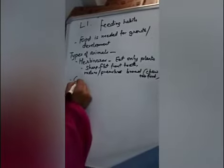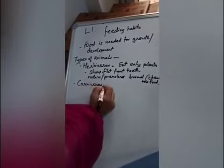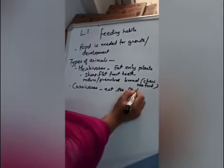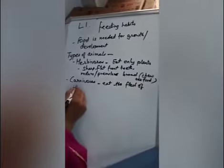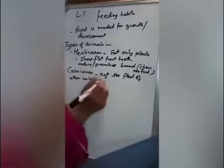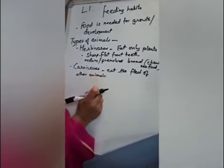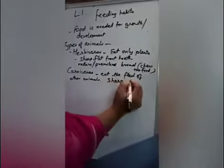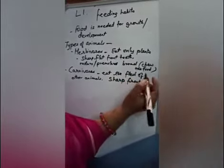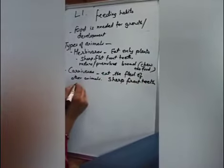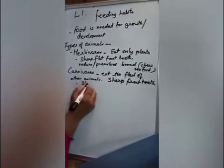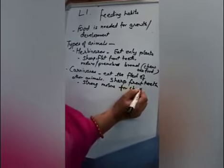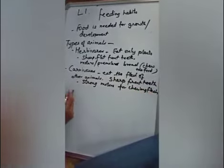The next type of animals are carnivores. Carnivores are those that eat the flesh of other animals. For that, what kind of teeth should they have? The front teeth should be very sharp so that they can tear up the flesh. The molars and all the other teeth should be very strong — strong molars for chewing the flesh of other animals.